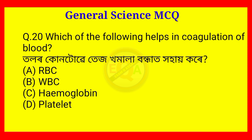Question number 20. Which of the following helps in coagulation of blood? The answer is Option D — Platelet.